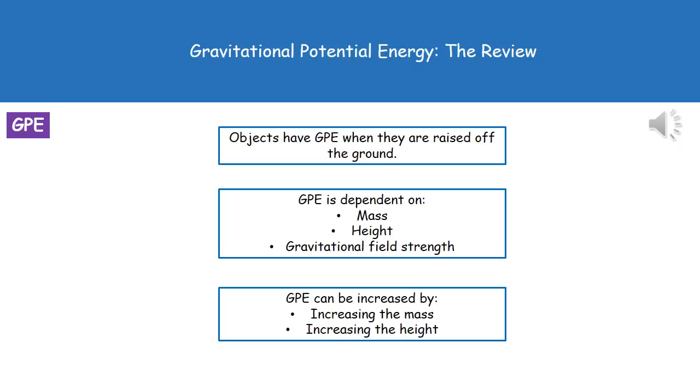If they ask you on the exam paper about how we could increase gravitational potential energy, don't just say change the mass. Make sure you say increase the mass or increase the height.